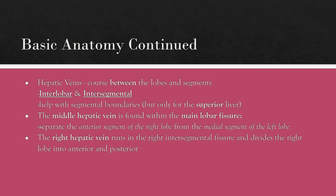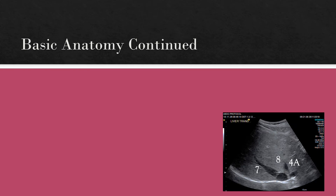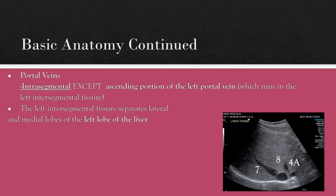We can use our hepatic veins to help identify different segmental boundaries. The middle hepatic vein is found within the main lobar fissure, and it helps separate the anterior segment of the right lobe from the medial segment of the left lobe. The right hepatic vein runs in the right intersegmental fissure and divides the right lobe into anterior and posterior segments. When it comes to portal veins, they are actually intrasegmental, except for the portion of the ascending left portal vein, which is intersegmental. The left intersegmental fissure helps separate the lateral and medial segments of the left lobe.